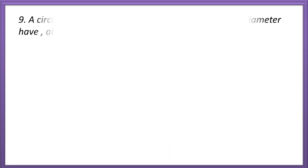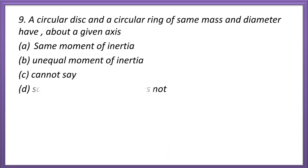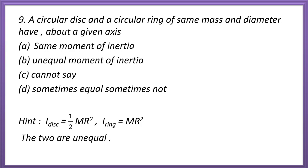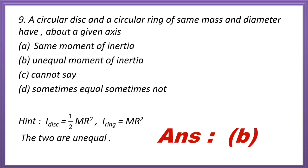Question 9. A circular disc and a circular ring of same mass and diameter have about a given axis: same moment of inertia; unequal moment of inertia; cannot say; sometimes equal sometimes not? Moment of inertia of disk = ½MR², and moment of inertia of ring = MR². These two are unequal. So the correct answer is option B.